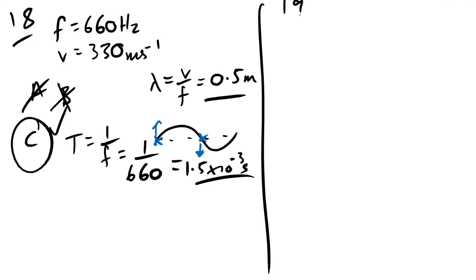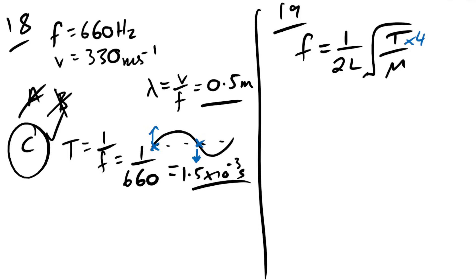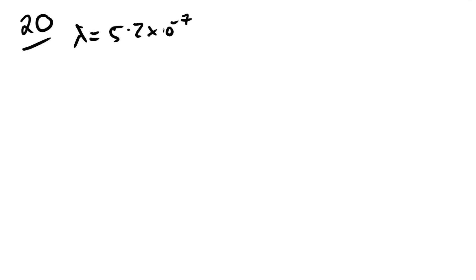Question 19: if tension increases fourfold, the wave speed doubles (v ∝ √T), so the fundamental frequency doubles. We want the harmonic with frequency 2f after the change — that is now the fundamental frequency itself. The answer is the first harmonic.